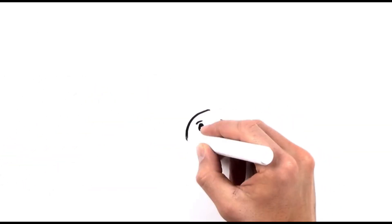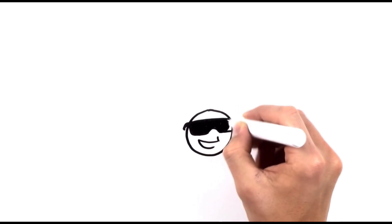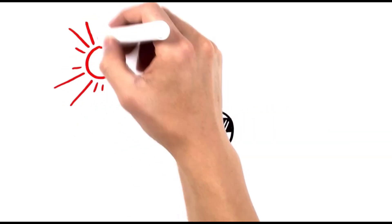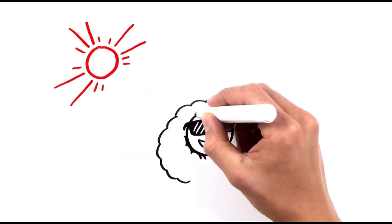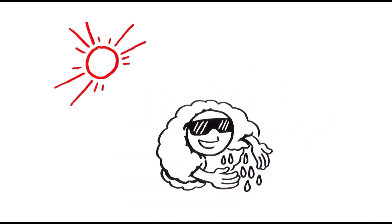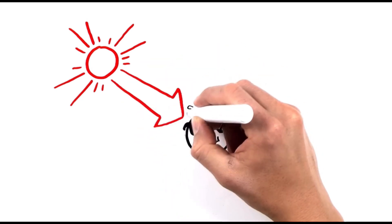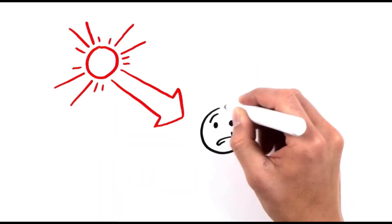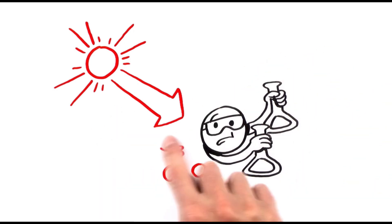Depending on what it is and where it is, an aerosol particle can do some impressive things, like cool the planet by reflecting sunlight back into space or by collecting water vapor to build a cloud. On the other hand, some aerosol particles trap sunlight and heat the air, thus preventing clouds from forming. Other aerosols can host chemical reactions that damage the ozone layer.